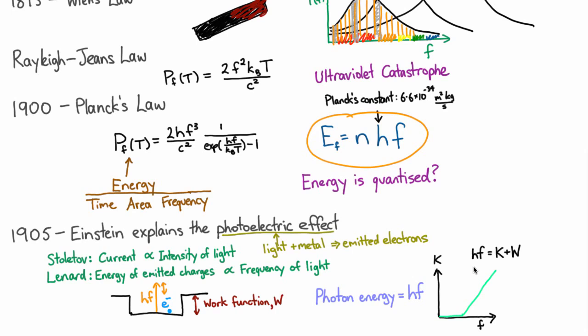Einstein's theory does explain why the intensity of the light gives us a current. Because the intensity of the light just tells us how many photons we have. It doesn't tell us how much energy each of those photons have.